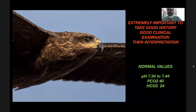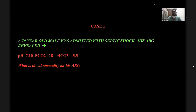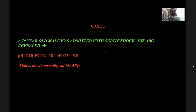For the interpretation of blood gas, the normal values we take are: pH 7.34 to 7.44, carbon dioxide 40, and bicarbonate 24. Case 1: A 70-year-old male was admitted in septic shock. His ABG revealed pH 7.10, PCO2 18, and bicarb 5.5.